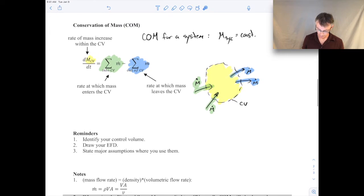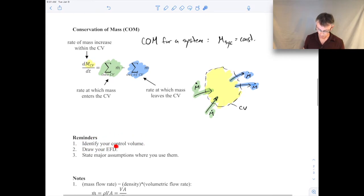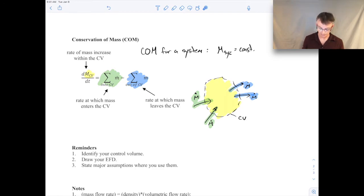So just a few comments on applying conservation of mass. First of all, you always need to identify a control volume like what I've done over here. Draw your energy flow diagram. So here I've shown where mass is coming in and mass is going out. Conservation of mass only involves mass. It doesn't involve heat or work. The first law involves those things. And then state any major assumptions where you use them. For example, if I was dealing with a steady state, I would set this left-hand term equal to zero because steady state means it's not changing with time. So I would set this equal to zero and say the control volume is in steady state, for example. So you state what the assumption is where you're using it.